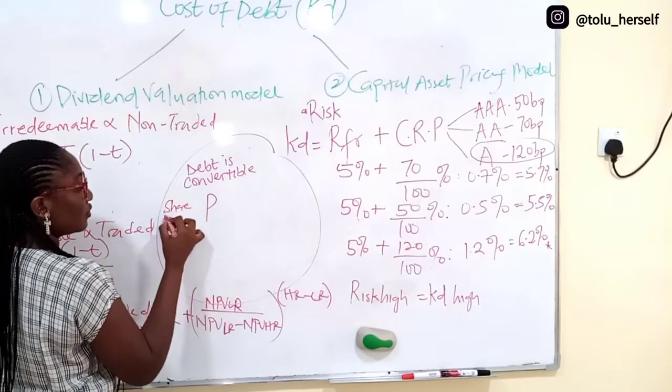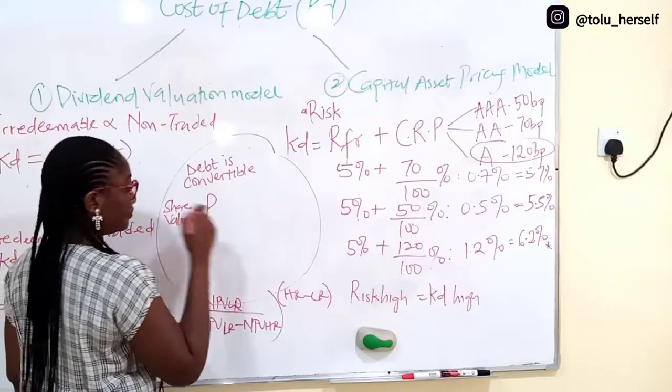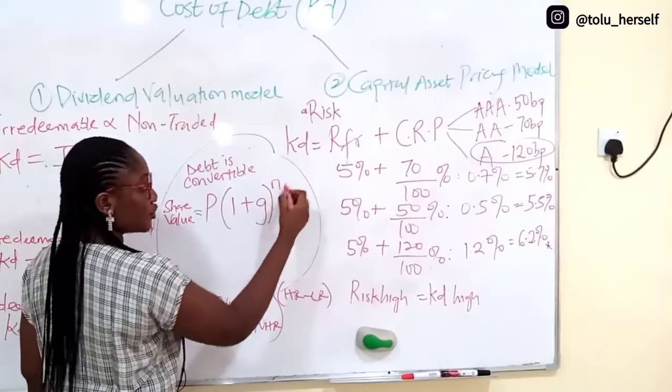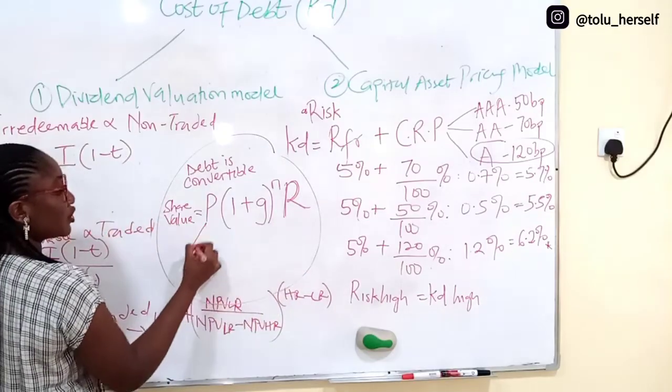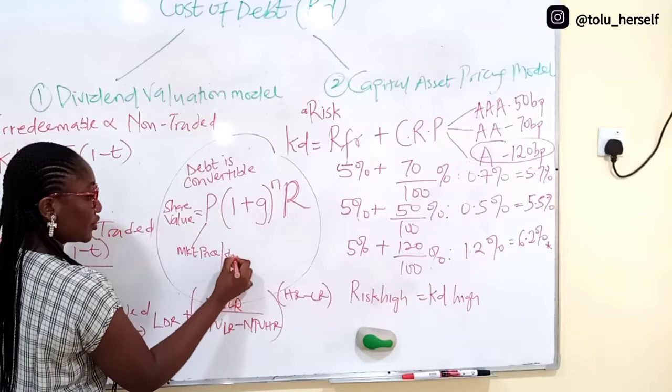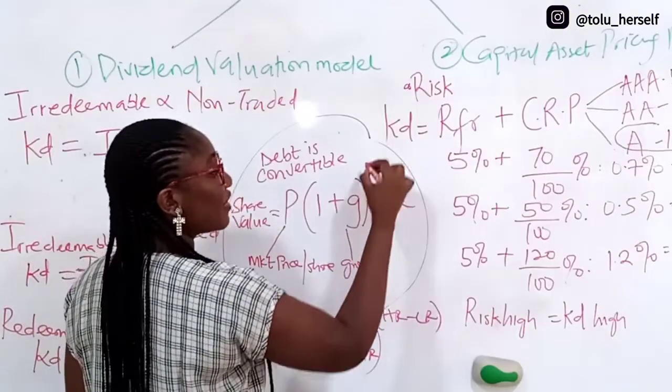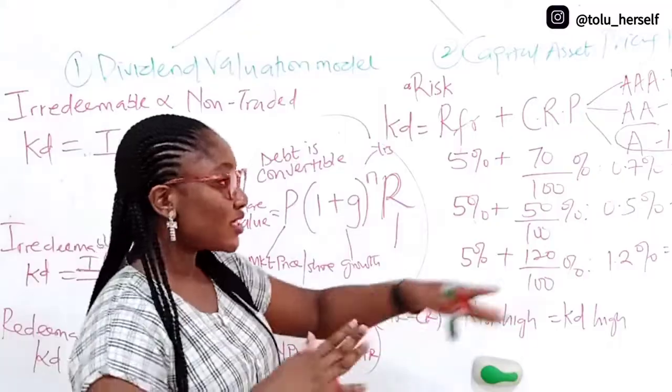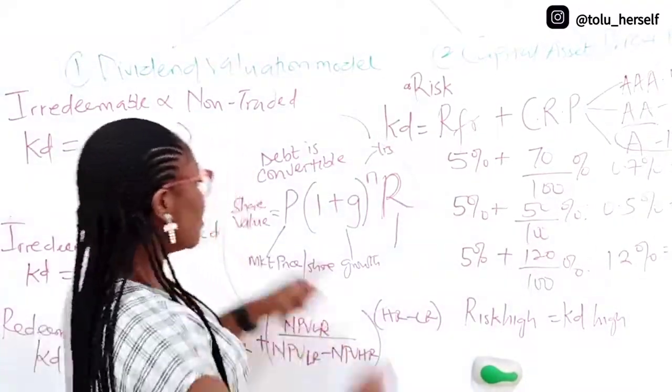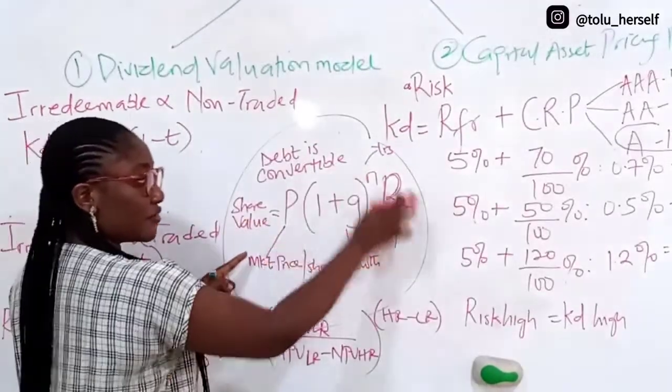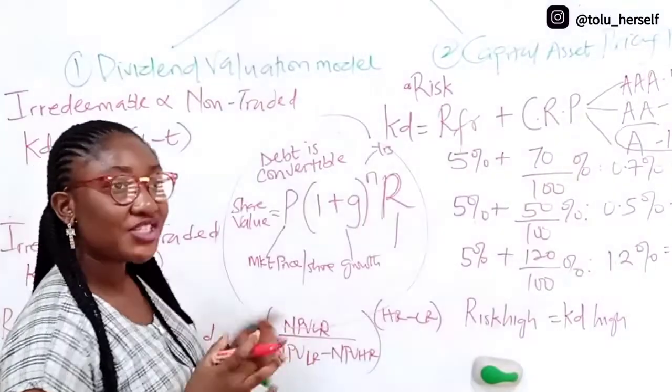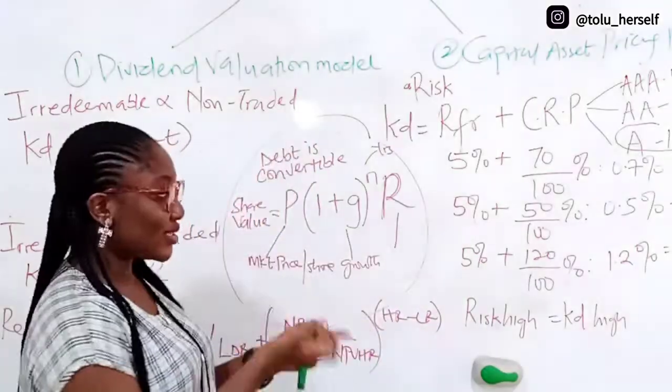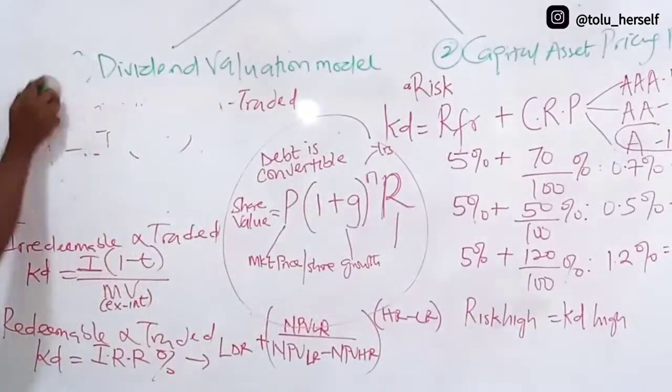The formula is P, the share value, times 1 plus G to the power N, times R. P is the market price per share currently, G is the growth rate, N is the number of years to redemption, and R is the number of shares in exchange - they will tell you it's either receive cash or receive maybe 600 shares. You calculate this share value using the formula, then compare with cash. If share value is 600 million and cash is 400 million, obviously you pick the higher value. It's just a twist to this whole cost of debt, so time to solve examples.